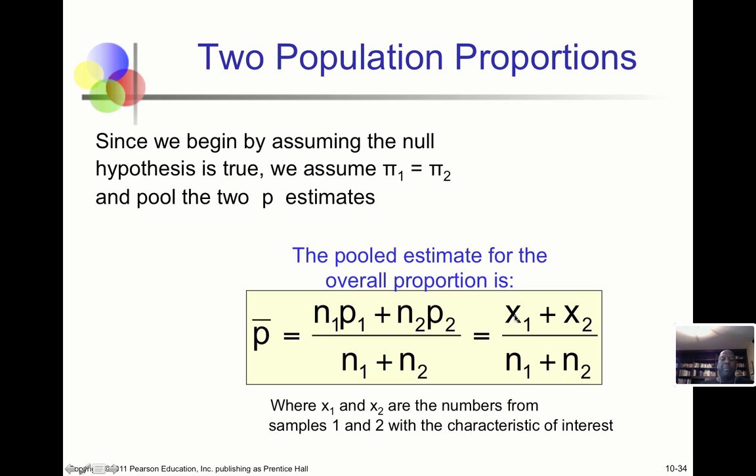You recall that a sample proportion is to count up the number of observations in a sample divided by the sample size. So x1 would represent the number of favorable observations from sample 1 divided by n1, and x2 would be the number of favorable observations in sample 2 divided by n2. But if we pool them together, that would then be the total number of favorable observations. For example, if we go back to the case where we talk about distinctions, let x1 represent the number of distinctions in the school of business, and x2 represent the number of distinctions in the faculty of science. If we combine them, we have a total number of distinctions over a total sample size. And that gives us a single point estimate, p bar, which would be a pooled estimate of the overall proportion.